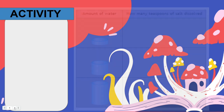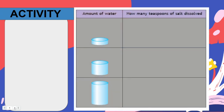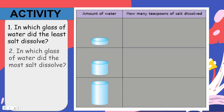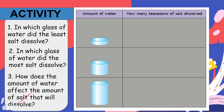This is your table of results where you will record your observations. In which glass of water did the most salt dissolve? And how does the amount of water affect the amount of salt that will dissolve?